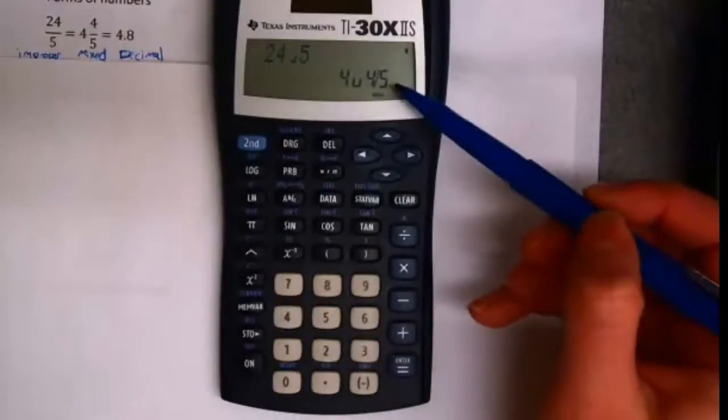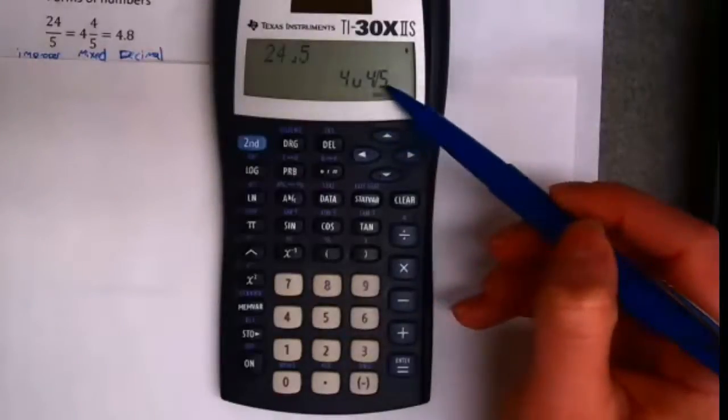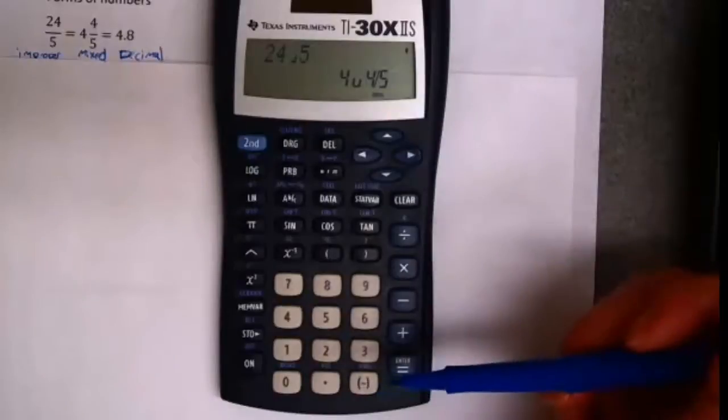Okay, now right now, the calculator is telling me that's 4 union, or 4 and 4 fifths. So that's what the value would look like as a mixed number.